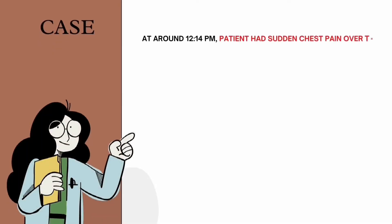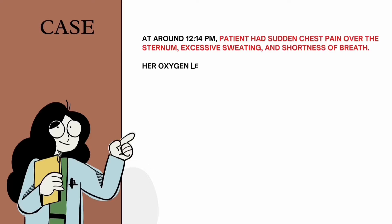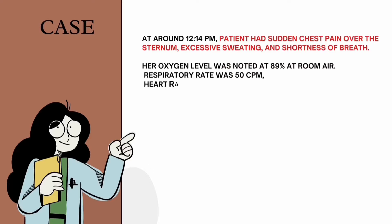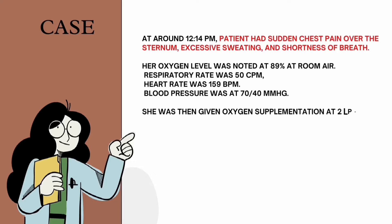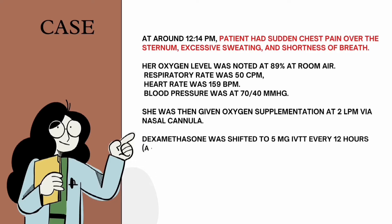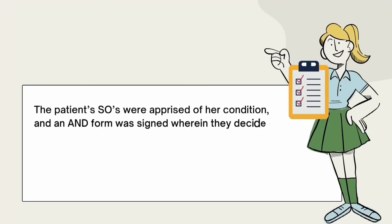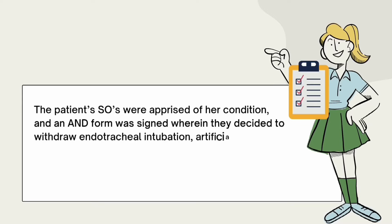At 12:14 PM, the patient had sudden chest pain over the sternum, excessive sweating, and shortness of breath. Her oxygen level was noted at 89% on room air, respiratory rate 50 cpm, heart rate 159 per minute, and blood pressure 70 over 40. She was given oxygen supplementation at 2 LPM by nasal cannula, and dexamethasone was shifted to 5 milligrams IV every 12 hours; cytarabine infusion was stopped.